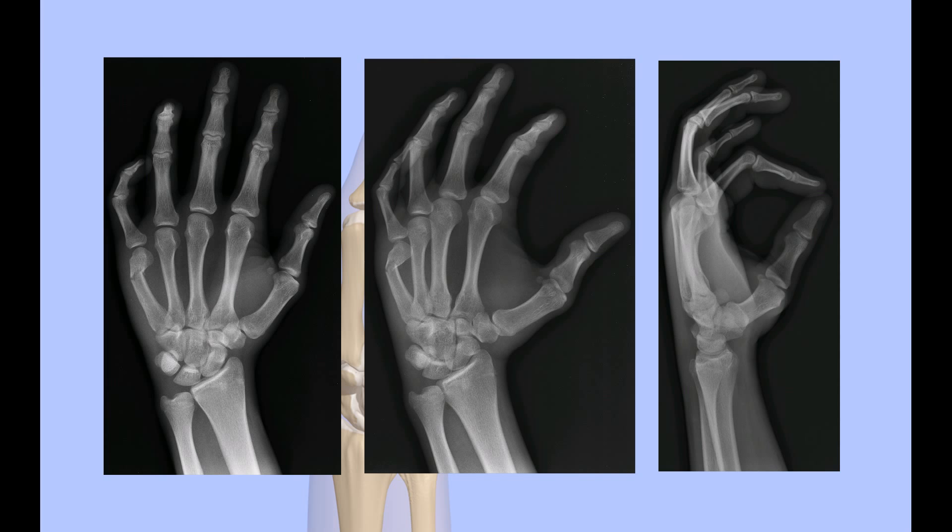X-rays are obtained. They demonstrate a fracture of the fifth metacarpal neck. There is an unacceptable degree of volar angulation. The fracture must be reduced or set.